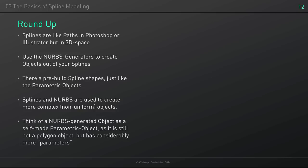That's it for the spline modeling session. I'd advise you to try building some objects with the spline tools and find the best-fitting NURBS generator for each. For example, try to create a bottle, a wine glass, or a candle — just pick something from your home or office and try to build it using splines and NURBS generators. Don't focus too much on the details for now — just find your way around, get used to using splines, the NURBS generators, and try to understand the differences between the different generators. See you next time!